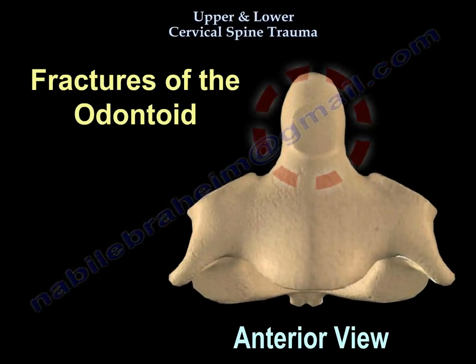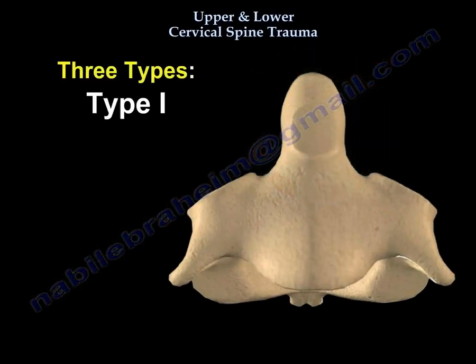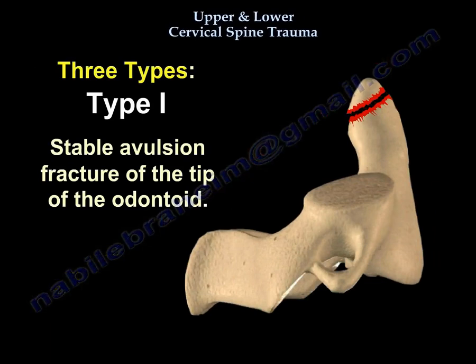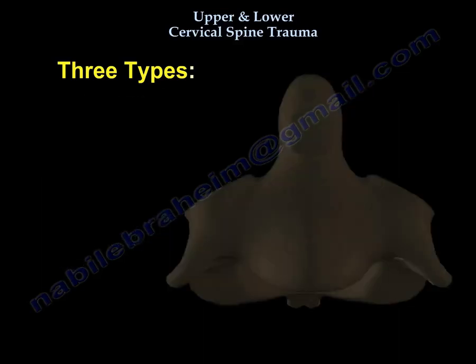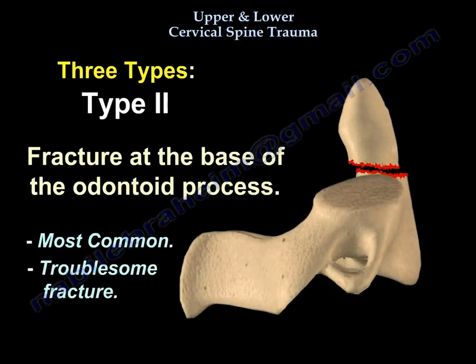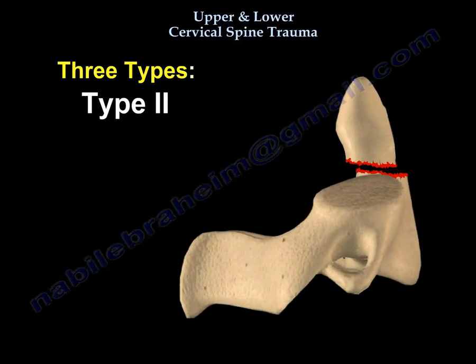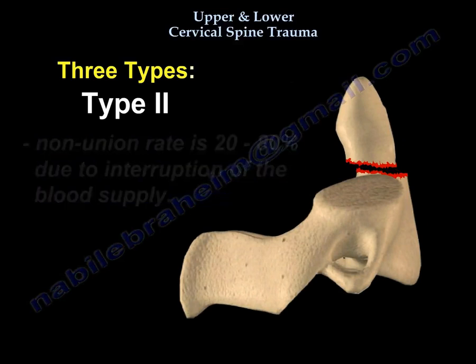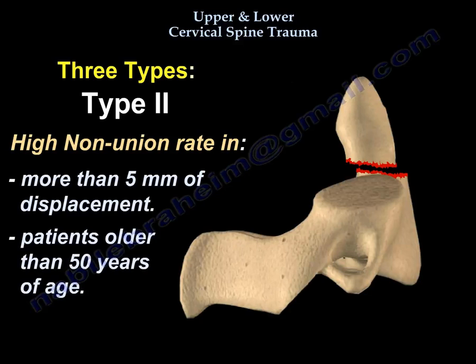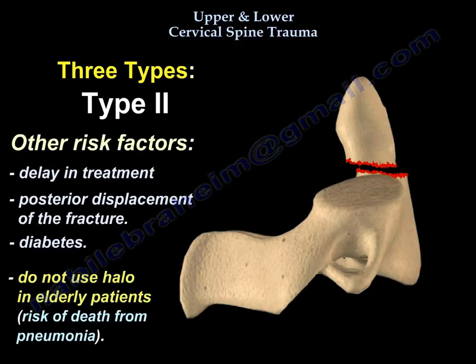Another injury is odontoid fracture. Type 1 is an avulsion of the tip — you will give the patient an orthosis. Type 2 involves the odontoid process itself. The non-union rate is high, up to 80%, especially if you have more than 5 mm of displacement or the patient is older than 50 years. Other risk factors are delay in treatment, posterior displacement of the fracture, and diabetes. Do not use a halo in the elderly — they will die from pneumonia.